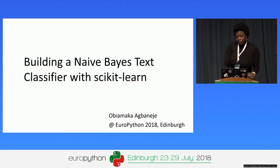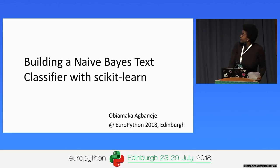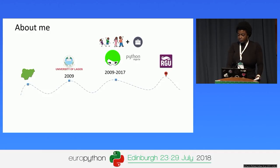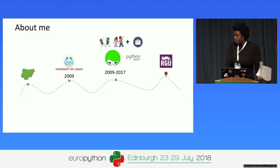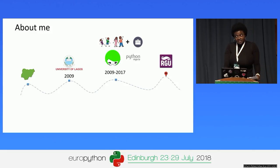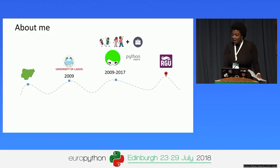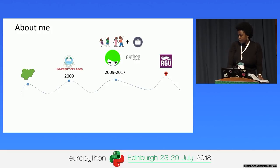Hello everyone. My name is Obiama Karagbanije, and this afternoon I'll be talking about building a Naive Bayes text classifier with scikit-learn. I'm from Nigeria and I'm a graduate of computer engineering from University of Lagos, and I've worked in the IT, telecoms, and travel industry. I heard that data science is the sexiest job of the 21st century, and I said okay, I want a piece of that action. So I hopped on a plane and I'm currently studying data science at Robert Gordon University, Aberdeen.